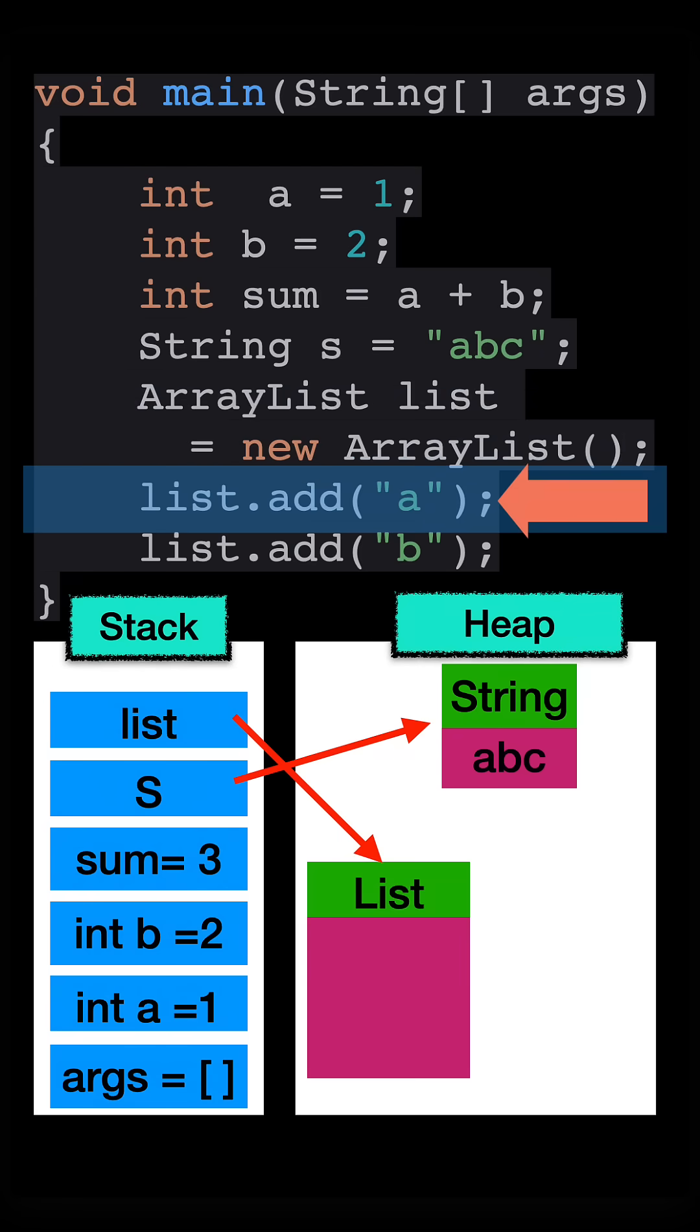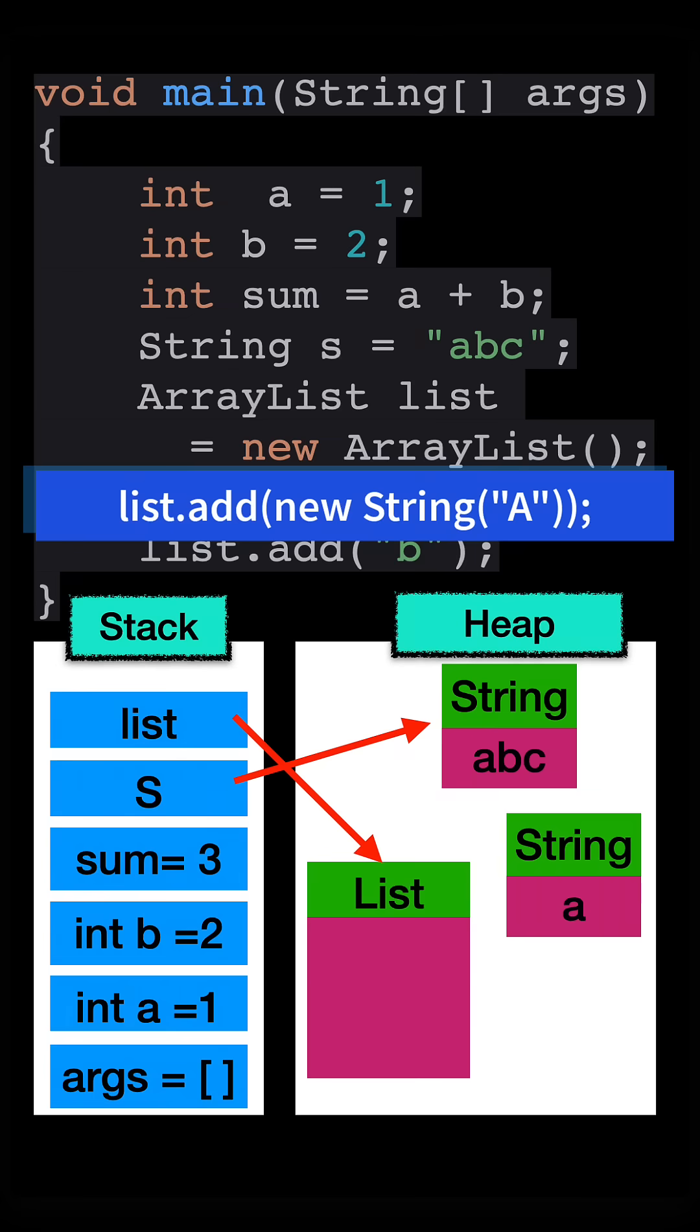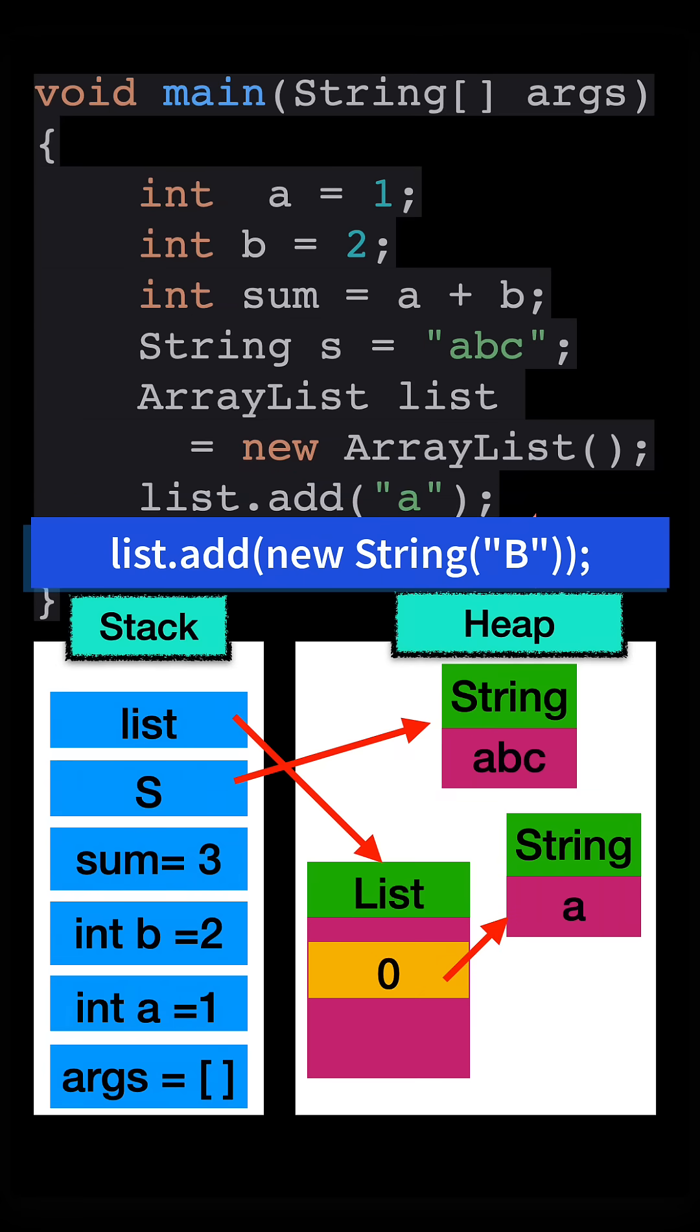Now here we are creating a new string a and then adding it to the list. So the string object gets created on the heap and the list index 0 points to that string. And then here we are creating another string called b and the list index 1 pointing to that string.